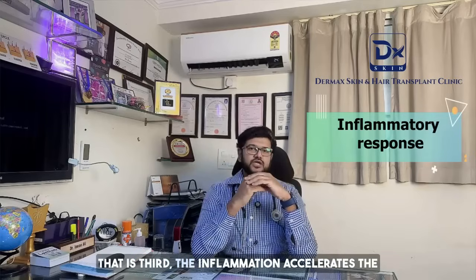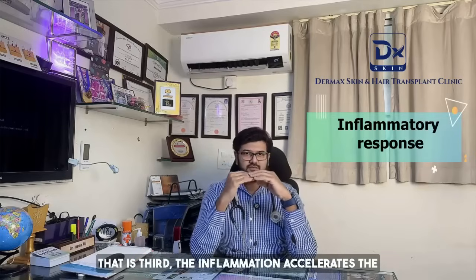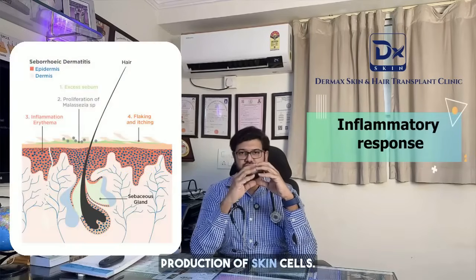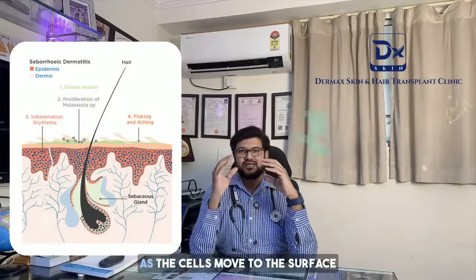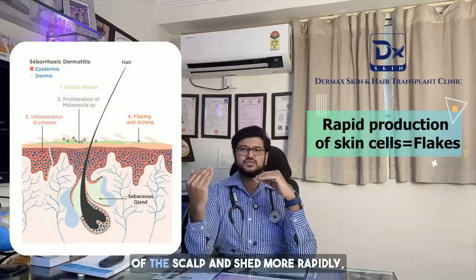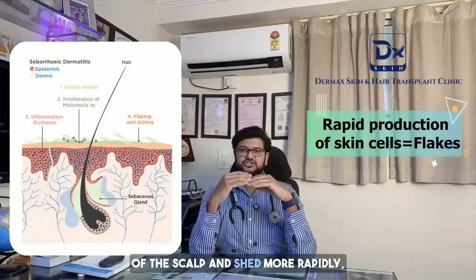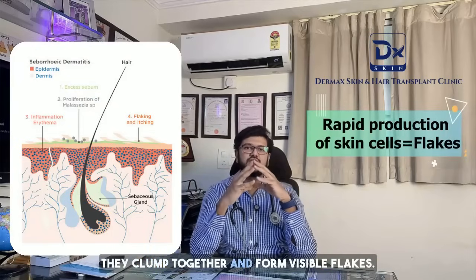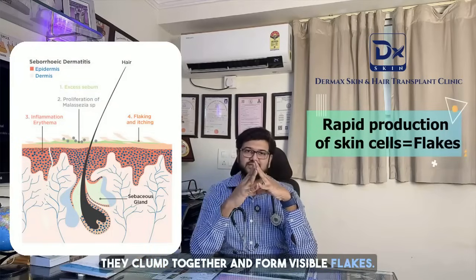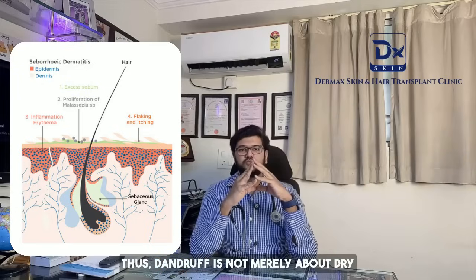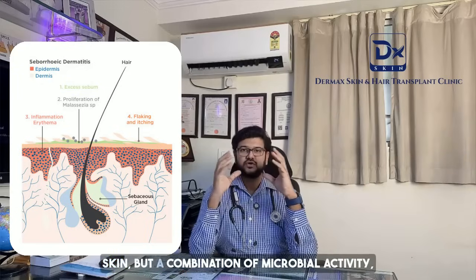In individuals who are sensitive to oleic acid, this triggers irritation and an inflammatory response. The inflammation accelerates the production of skin cells. As the cells move to the surface of the scalp and shed more rapidly, they clump together and form visible flakes. Thus dandruff is not merely about dry skin but a combination of microbial activity, inflammation, and abnormal skin cell turnover.